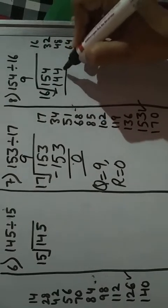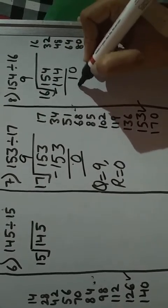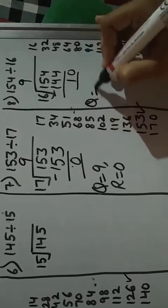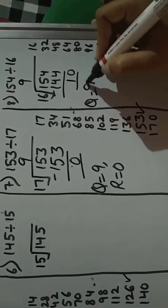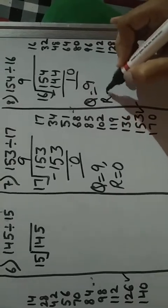4 minus 4 is 0, 5 minus 4 is 1. So quotient is 9, remainder is 10.